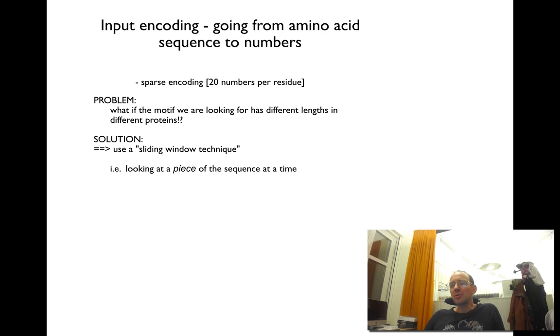Often it's not just one position that is important for this feature, but there are several positions around it. So the key here is to use what's called a sliding window technique, where you look at one piece of the sequence at a time.